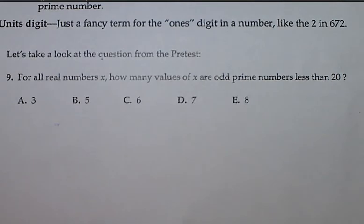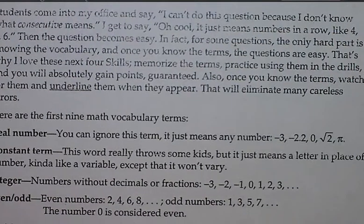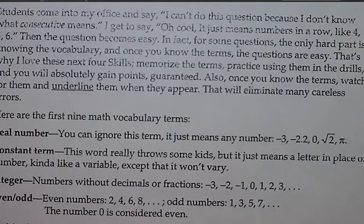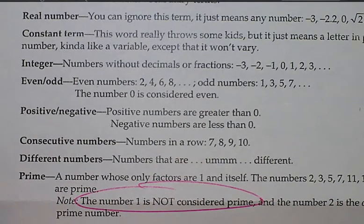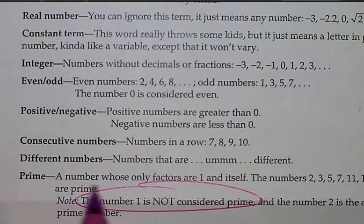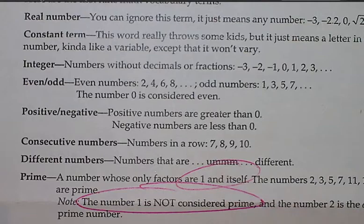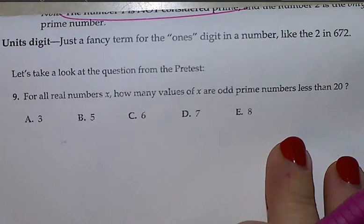Okay, so this is ACT skill number 9. And up above, if you read the definitions, it goes over prime numbers. And it does say, please circle this portion, that the number 1 is not considered prime. A prime number is those who can only achieve a number by multiplying 1 times itself. And that's going to be helpful when we do this first example for skill set number 9.